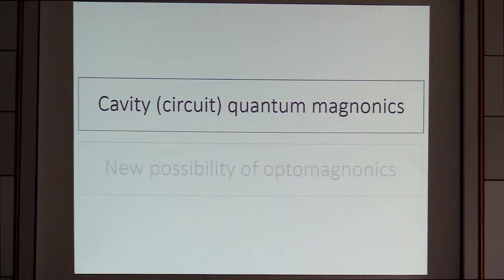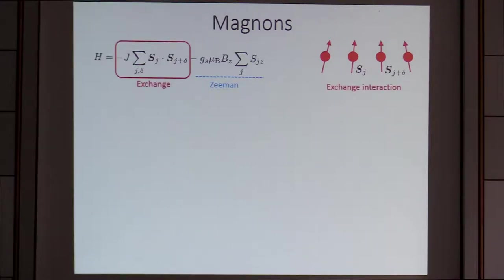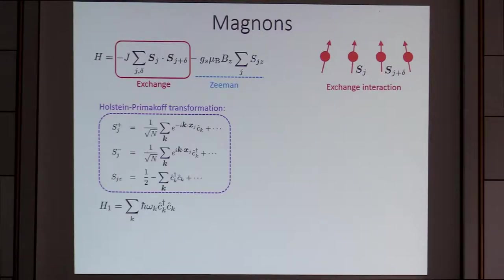About cavity quantum magnonics: let's start by reminding you what a magnon is. This is the simplest Hamiltonian describing a ferromagnet. There are two terms: the second term is the Zeeman energy, and the first term is the exchange energy. This is not an apparently diagonal Hamiltonian. We can diagonalize it by invoking the famous Holstein-Primakoff transformation, and we get this harmonic oscillator-type excitation — that is the magnon.